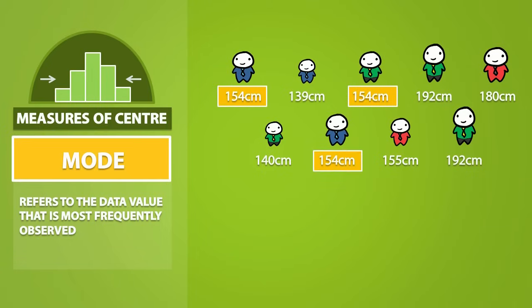Notice how the number 154 appears three times in this dataset. This means that the mode of this dataset is equal to 154.